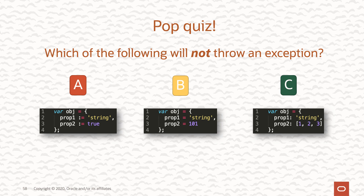Pop quiz: which of the following will not throw an exception? All three are trying to create an instance of an object literal. Option A uses the PL/SQL assignment operator (colon-equals) — that's not going to work in JavaScript. Option B uses the correct JavaScript assignment operator, but the wrong syntax for an object literal. Option C correctly uses name-value pairs separated by a colon — that is the correct syntax, so C is the one that will not throw an exception.